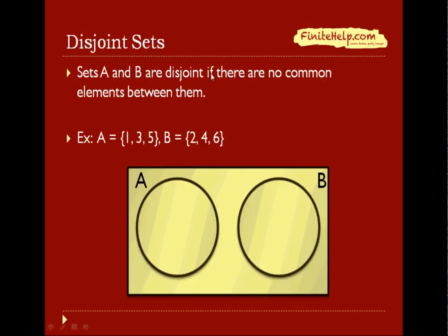Sets A and B are disjoint if there are no common elements between them. So here's an example. We have a set A with the elements 1, 3, and 5, and set B with elements 2, 4, and 6. So notice there is nothing in common between A and B. So A and B are said to be disjoint.